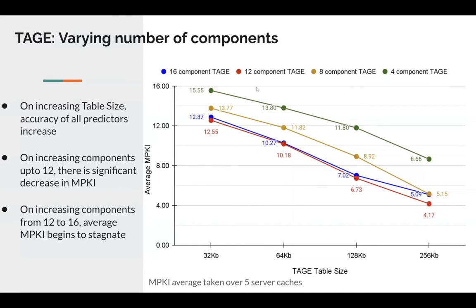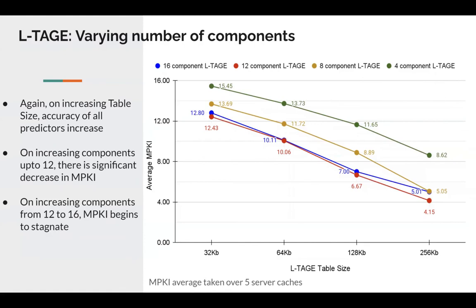However, when increasing from 12 components to 16 components there is not much difference — accuracy becomes stagnant after that. Similarly, for LTAGE, we calculated the average MPKI over 5 server traces and observed that increasing table size leads to a significant improvement in accuracy.